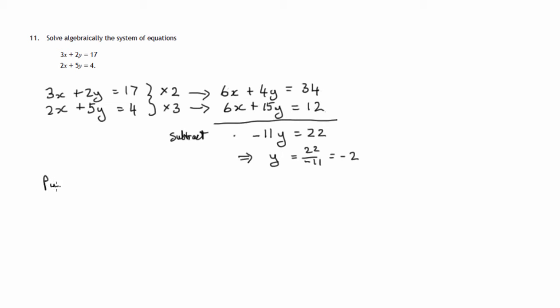So let's now put the value we've found, that's y equals negative 2, into one of these equations. It doesn't matter which. So let's take the first one. 3x plus 2y equals 17. So we have 3 lots of x plus 2 lots of, we now know it's negative 2, is equal to 17. So 3x, 2 lots of minus 2 is minus 4, equals 17. Add 4 to both sides. 3x equals 21. Divide both sides by 3, x equals 7.